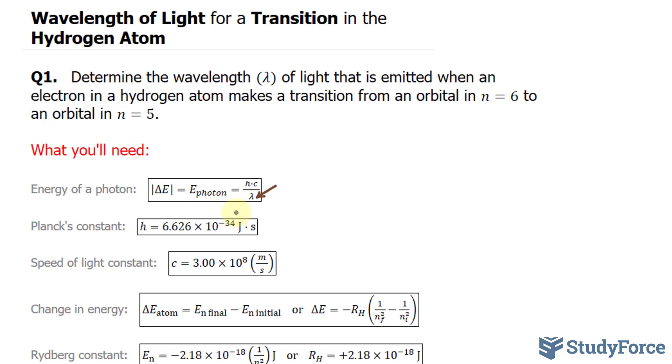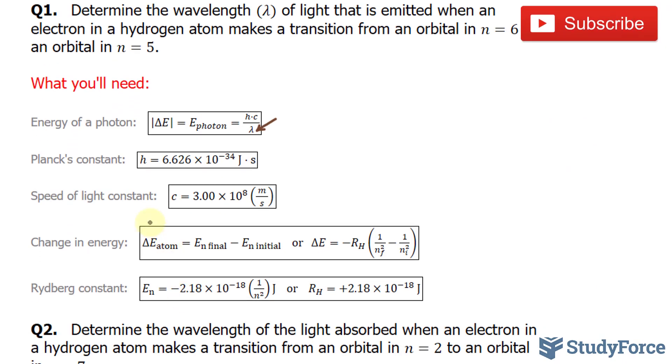Now we're told that there's a transition from n equals 6 to n equals 5. What we have to do is find delta E. And whatever delta E is, we take the absolute of it and that's the exact same thing as the energy of the photon.